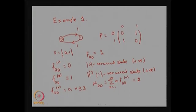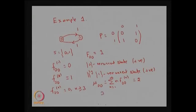In this finite discrete-time Markov chain with two states, both states are positive recurrent and communicating with each other. The state space is {0, 1} and the closed communicating class is also {0, 1}. Since we cannot partition the state space into more than one communicating class, this Markov chain is irreducible.